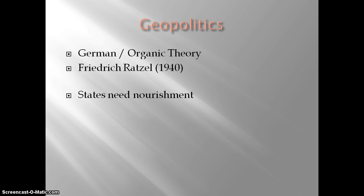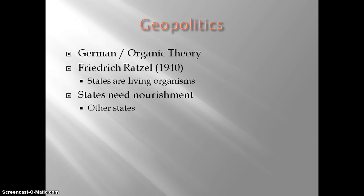The first is the German or Organic Theory of Global Geopolitics, developed by Friedrich Ratzel. His theory posits that states are just like a living organism. States are made up of people, who are living organisms, so states should act almost like living organisms. In order for states to survive and thrive, they need nourishment — natural resources, people to run the economy, and food produced for that particular state. So if a state's population begins to grow, it needs to go out and overtake other states.